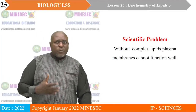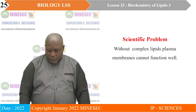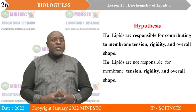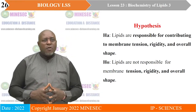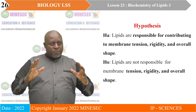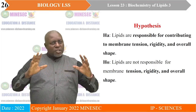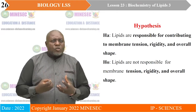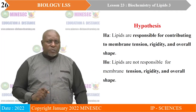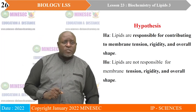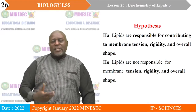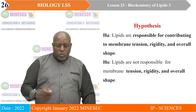Plasma membranes have a lot of complex lipids. Our alternative hypothesis is that lipids are responsible for contributing to membrane tension, rigidity, and overall shape — meaning the membranes have that shape, rigidity, and tension because of their constituent lipids. The null hypothesis is the contrary: that lipids are not responsible for membrane tension, rigidity, and overall shape. At the end, we will see which hypothesis stands. Some of the complex lipids we talk about include phospholipids, steroids, glycolipids, and waxes.